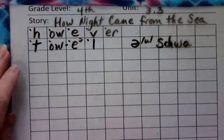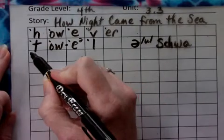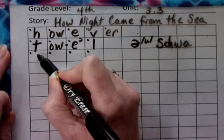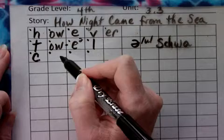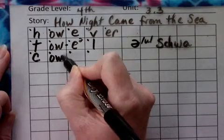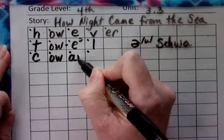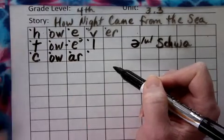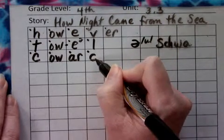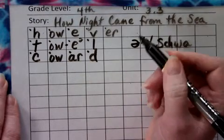The next word is 'coward.' Sound it out: C-OW-ER-D. It's a C, then OW — that's the O-W — then ER, which is the R-controlled vowel, then D. Please remember to put the bubble on the writing line, up to the top, down and bump. Coward.